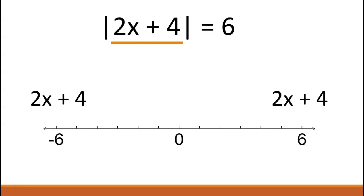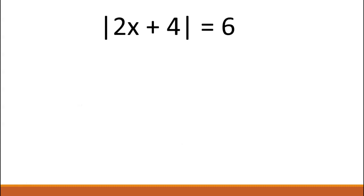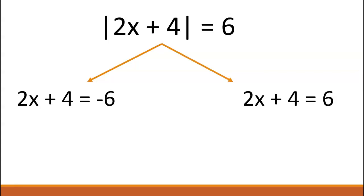So if two x plus four has to have an absolute value of six, two x plus four must represent one of two numbers. Think about the number line: what two numbers are six away from zero? We rewrite our equation as two cases: 2x plus four equals negative six, and 2x plus four equals positive six. Then we solve like normal.